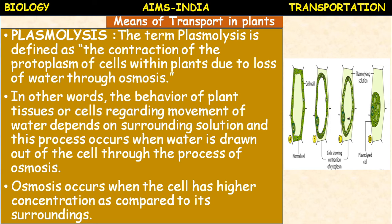Due to the withdrawal of water from cytoplasm and central vacuole, the size of the protoplasm reduces. This is the first stage of plasmolysis, called limiting plasmolysis.